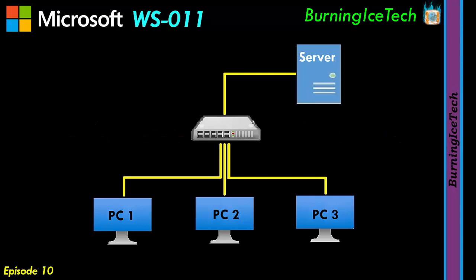I'm going to refer back to a picture we've used previously — from the episode where we discussed the difference between a workgroup and a domain. In a workgroup, if you have PC1, that PC authenticates onto itself. When you type in your password, that PC checks it in its own SAM — a small database containing the usernames and passwords on that specific machine. Each machine has its own SAM when it's on a workgroup.